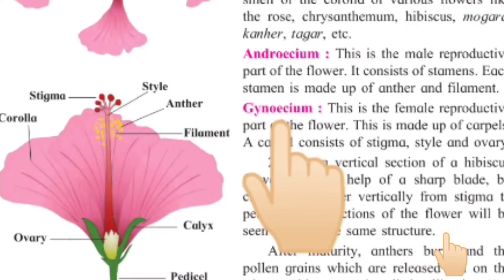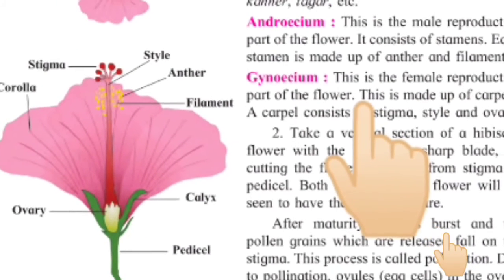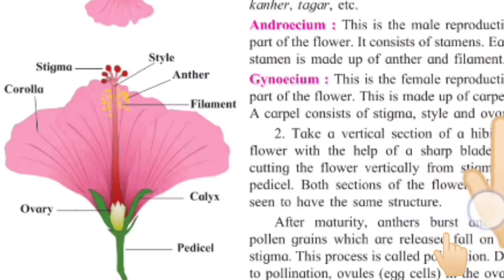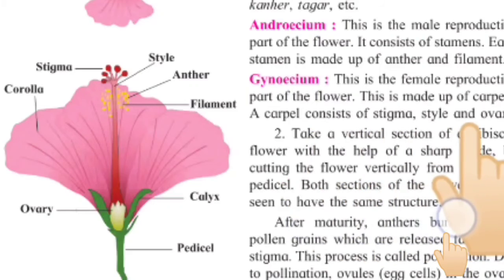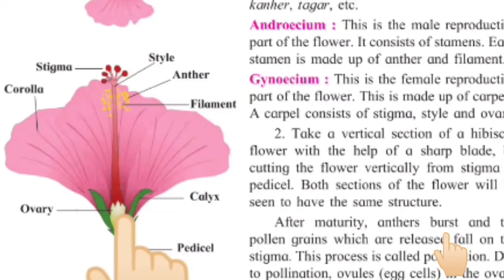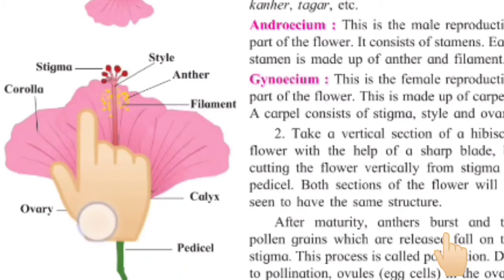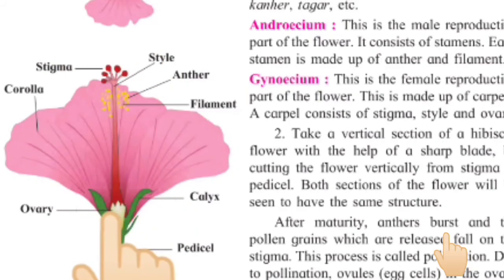Now comes the gynoecium part. This is the female reproductive part of the flower. It is made up of carpels. Carpels consist of stigma, style, and ovary. As in the androecium you have filament and anther, in the gynoecium the carpels consist of stigma, style, and ovary.